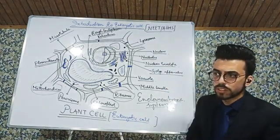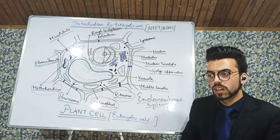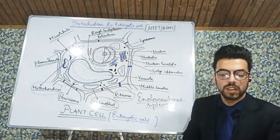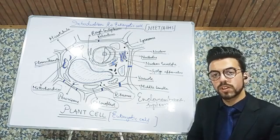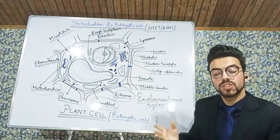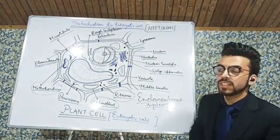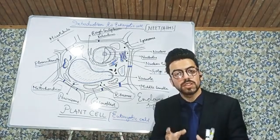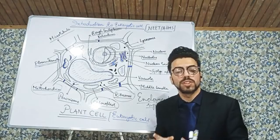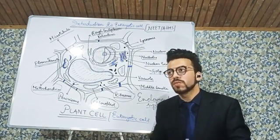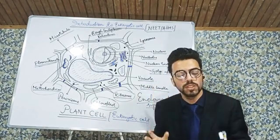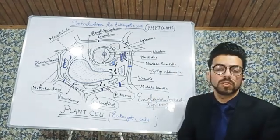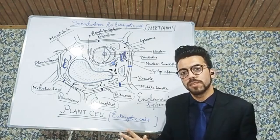Then we move on to another thing that is the Nucleus. Before we talk about the Nucleus, we need to understand the history of Nucleus. Nucleus was discovered by Robert Brown in the Orchard Root Cells in the year 1831. It's a fact and an important point. Nucleus is one of the most important organelles inside the cell. Nucleus controls and coordinates almost every activity inside the cell.